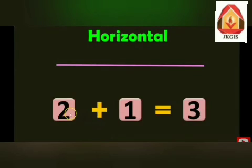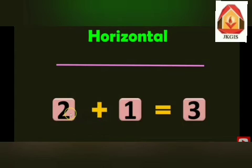Horizontal means a sleeping line. In this type of addition, the numbers are written side by side and they are added in a horizontal manner. Or we can say we add the numbers in a straight line. For example, 2 plus 1. Here we will put addition sign in between the numbers and the sum is written after the equal to sign. So, 2 plus 1 is equal to 3 and they are added in a horizontal way.